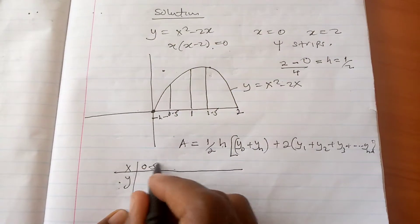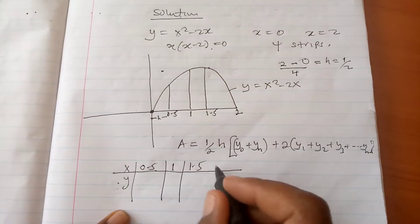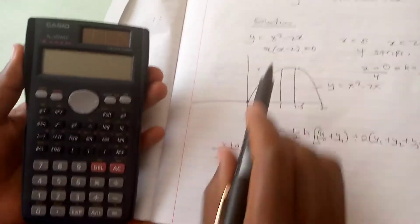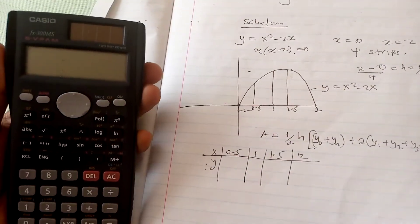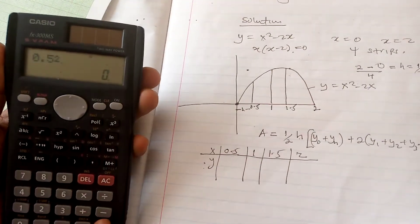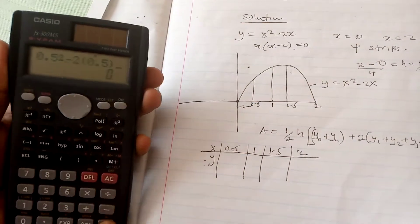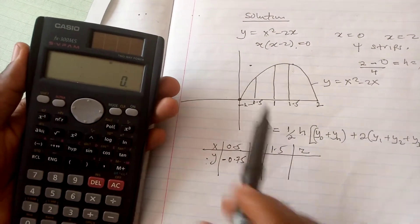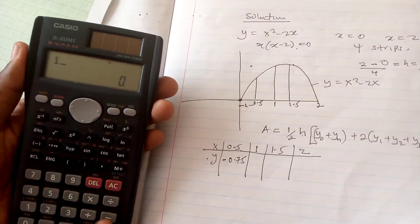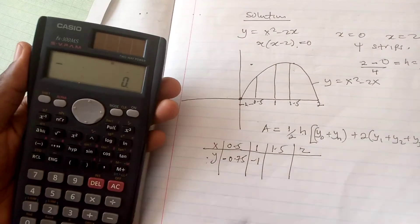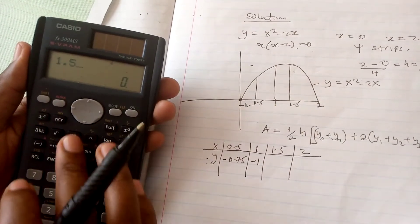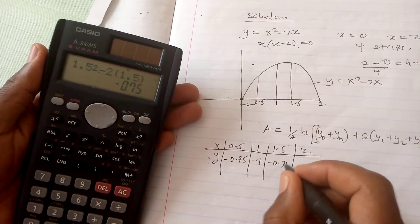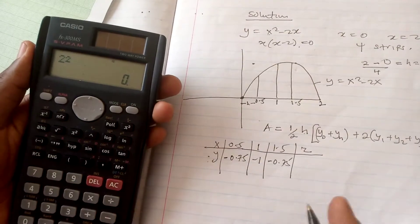We set up a table of x values and corresponding y values. When x equals 0, y equals 0. When x equals 0.5: 0.5 squared minus 2 times 0.5 equals negative 0.75. When x equals 1: 1 squared minus 2 equals negative 1. When x equals 1.5: 1.5 squared minus 2 times 1.5 equals negative 0.75. When x equals 2: 2 squared minus 4 equals 0.